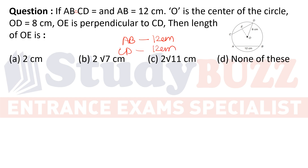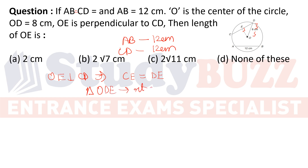O is the center of the circle, OD is 8 cm. OE is perpendicular to CD. We have to find the length of OE. Since OE is perpendicular to CD, it divides CD into two equal halves, so E is the midpoint of CD and CE = DE. Triangle ODE is a right angle triangle.